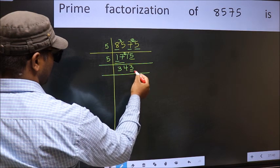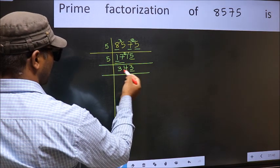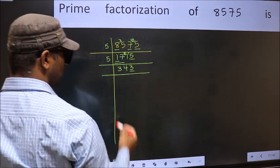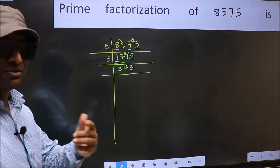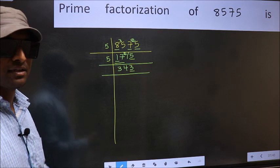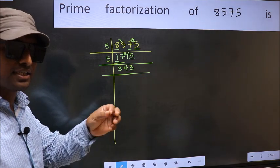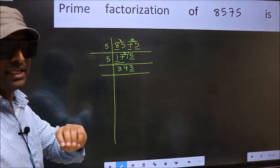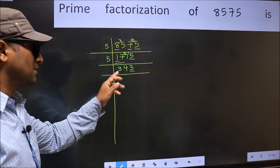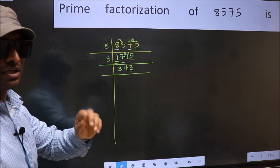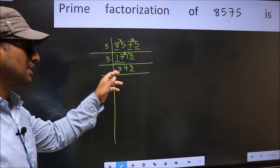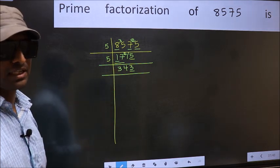Now last digit 3, not even, so not divisible by 2. Next prime number, 3. To check divisibility by 3, for that we should add the digits. What I mean is, 3 plus 4 plus 3, we get 10. And 10 is not divisible by 3, so this number also not divisible by 3.